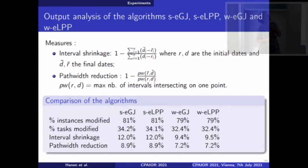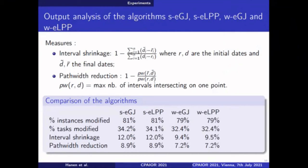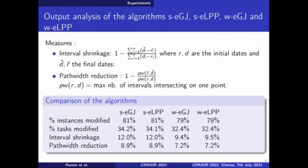Looking at the output analysis, we considered four parameters: the interval shrinkage corresponding to the relative diminution of the time windows, the peak width reduction, the number of instances modified, and the number of tasks modified. We observed that we obtain roughly the same numbers for the strong version and for the weak versions, but of course the strong version outperforms the weak versions if we analyze the output.